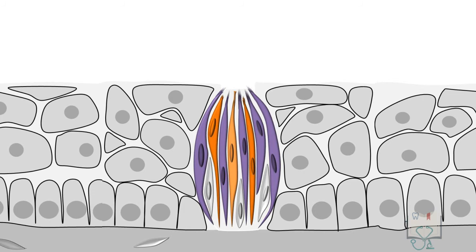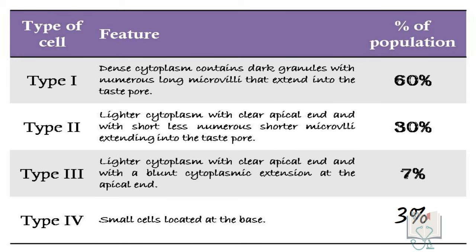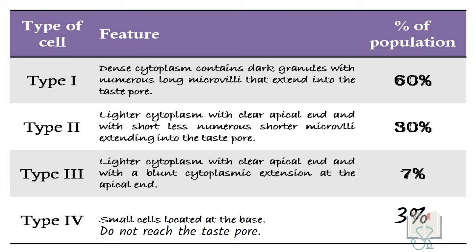Finally, Type 4 cells are relatively undifferentiated basal cells located at the base, forming only 3% of all cells. Among all these cells, only Type 4 cells do not reach the taste pore.